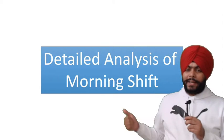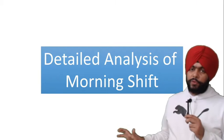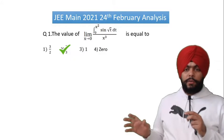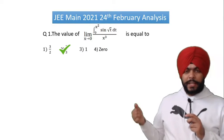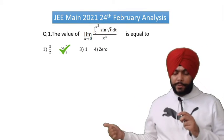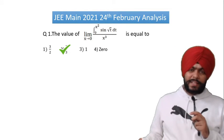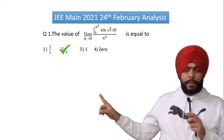Let's look at the detailed analysis of the morning shift, 24th February. Question number 1 was the value of limit x tends to 0. In this case you had to apply L'Hôpital's rule in one step, so it is definitely an easy question.